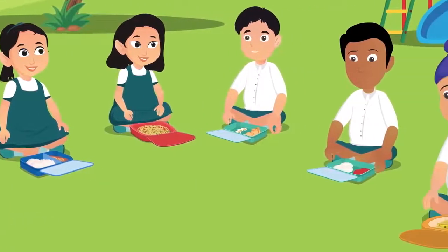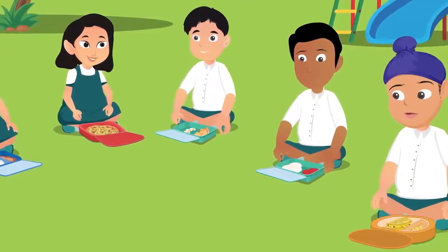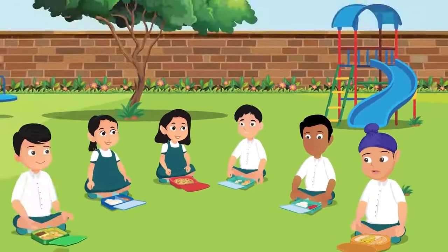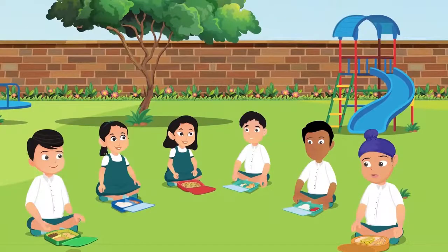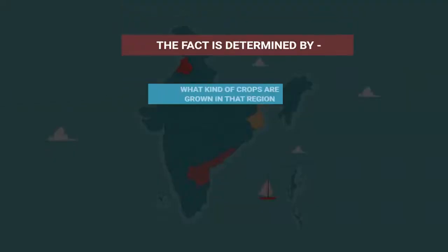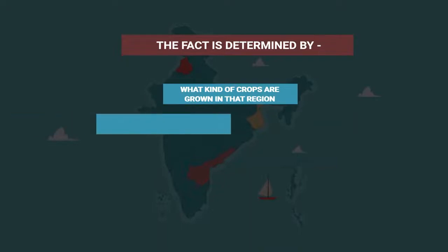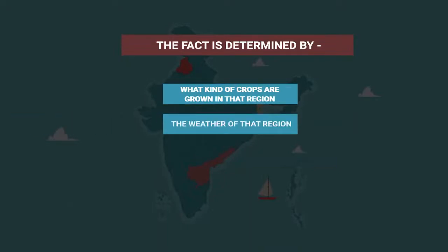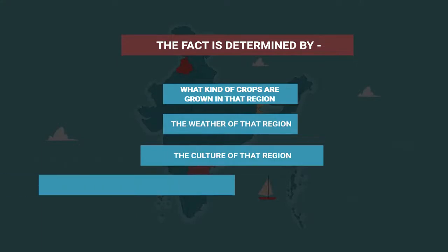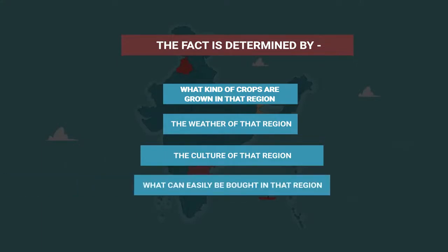So children, today we learnt that different kinds of food are consumed in different parts of India and the world. The factors which determine what kind of food is consumed in a region include: what kind of crops are grown in that region, the weather of that region, the culture of that region, and what can easily be bought in that region.